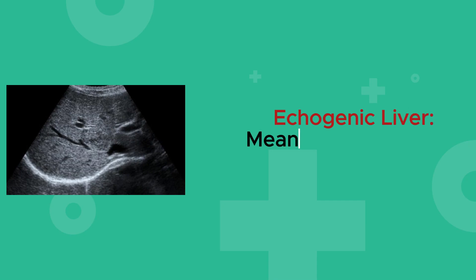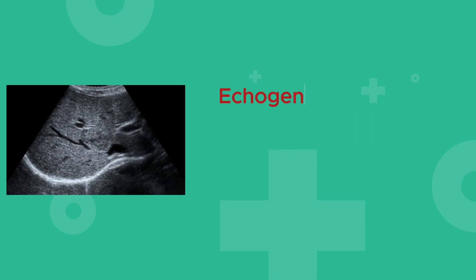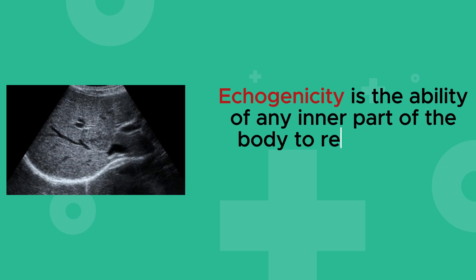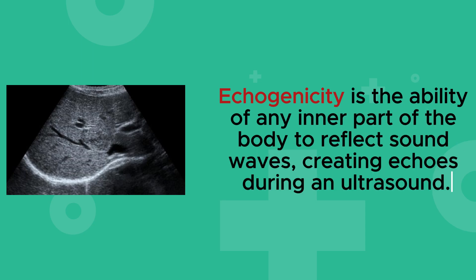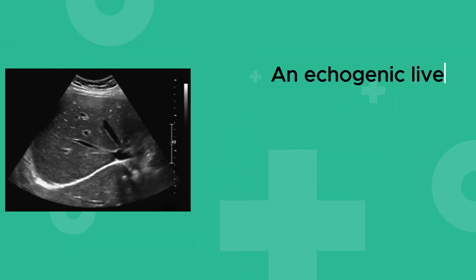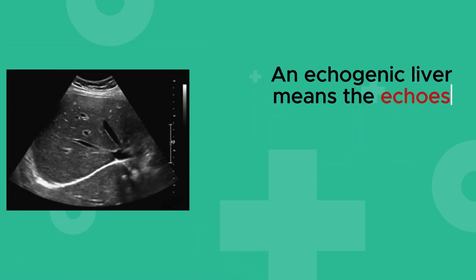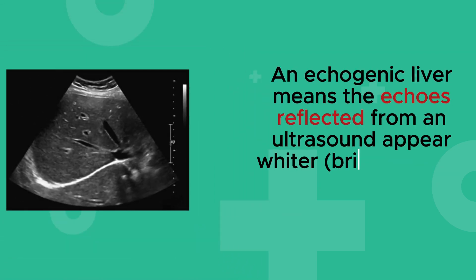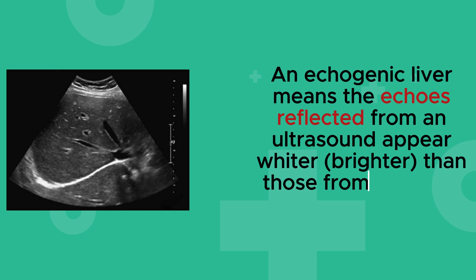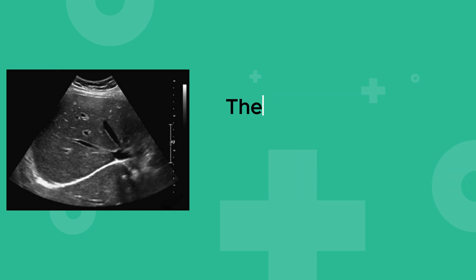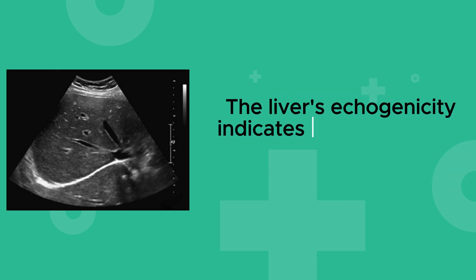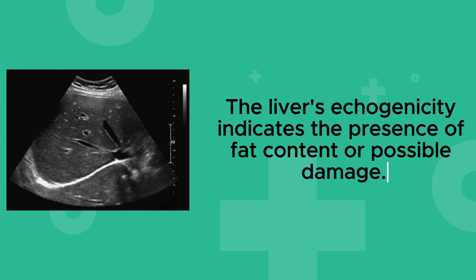Echogenic liver: meaning, causes, and diagnosis. Echogenicity is the ability of any inner part of the body to reflect sound waves, creating echoes during an ultrasound. An echogenic liver means the echoes reflected from an ultrasound appear wider and brighter than those from a normal liver. The liver's echogenicity indicates the presence of fat content or possible damage.